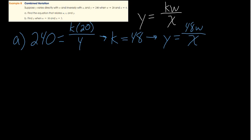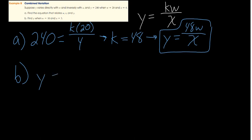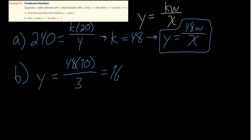Part (a): y is 40, w is 20, and x is 40. Solving for k: 40 equals k times 20 over 40, giving k equals 48. So the equation is y equals 48w over x. Part (b): find y when w equals 10 and x equals 3. So y equals 48 times 10 over 3, which is 480 over 3, equals 160.